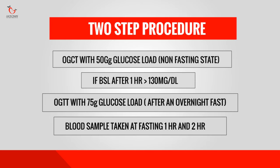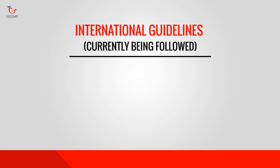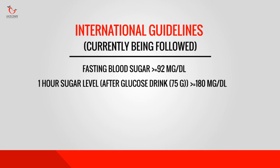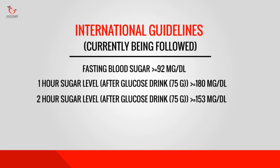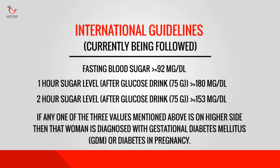Now let's see the guidelines for sugar levels. Currently, international guidelines are being followed. Your fasting sugar level — if it is more than or equal to 92 mg/dL — and if your 2-hour sugar level after giving glucose load is more than or equal to 153 mg/dL — then if any one of the values is on the higher side, that woman is diagnosed with gestational diabetes or diabetes in pregnancy.